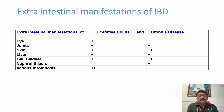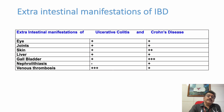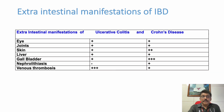Looking at the extra-intestinal manifestations chart: eye and joint involvement, skin involvement, and liver and gallbladder involvement are more common with Crohn's disease. Nephrolithiasis is also more common with Crohn's disease. Venous thrombosis is more common with ulcerative colitis. However, these features will not give you a definitive diagnostic clue for differentiating the types of inflammatory bowel disease.